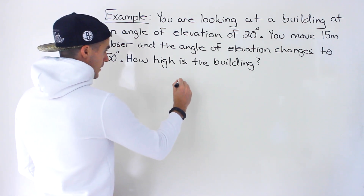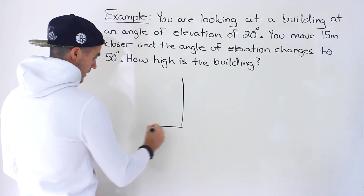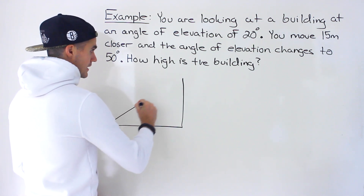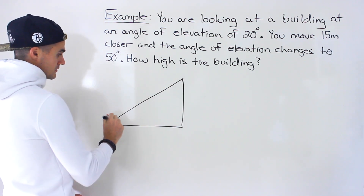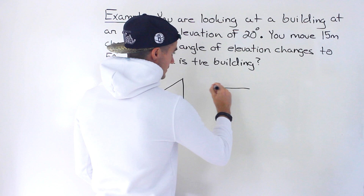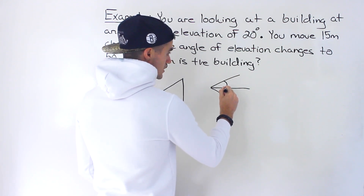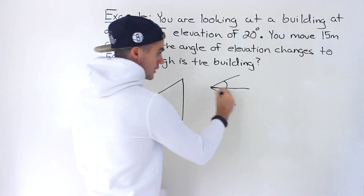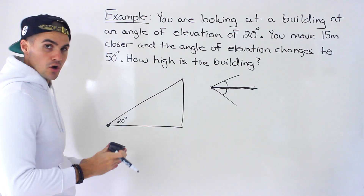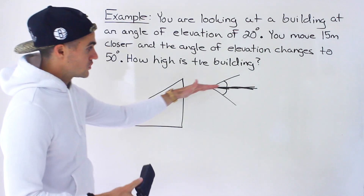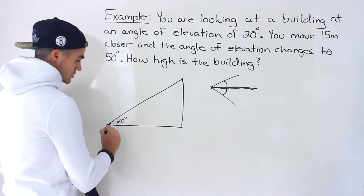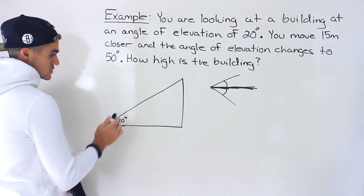Let's draw a diagram. The building is here, this is the ground, and initially you are right here. When you're looking up at the building, this is the line of sight. The angle of elevation is 20 degrees. Remember, the angle of elevation and depression are always measured from the horizontal — whether that's the ground or the sky. In this case, the horizontal is the ground, so the angle of elevation is 20 degrees.